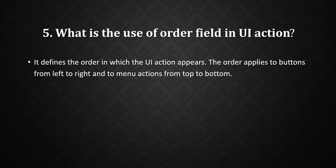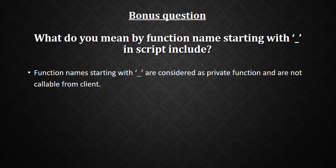The next question is: what do you mean by a function name starting with an underscore in Script Include? Function names starting with an underscore are considered private functions and are not callable from the client side. This question may also be asked as: what are private functions in Script Include, and how do we know a function is private? If a function name starts with an underscore, it is considered a private function.